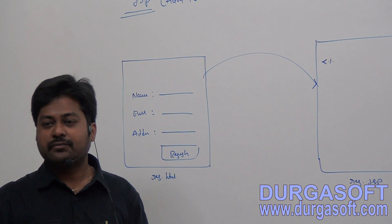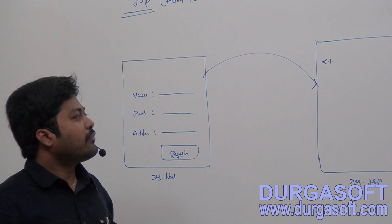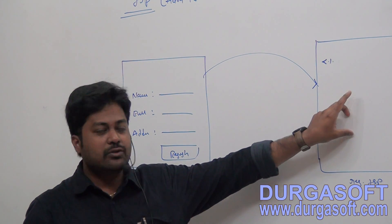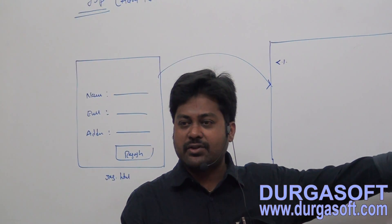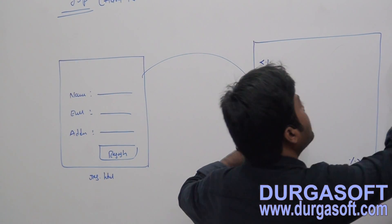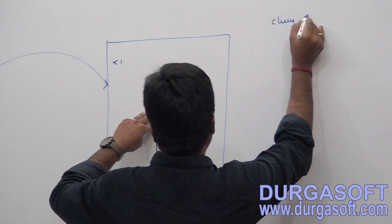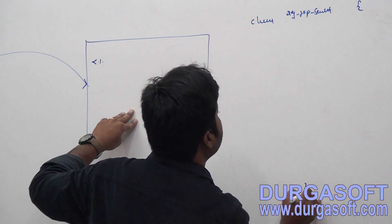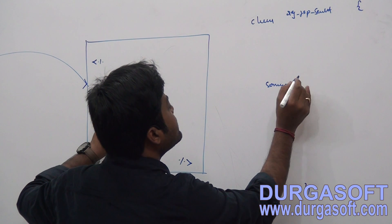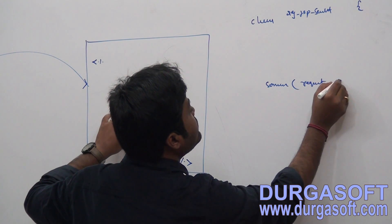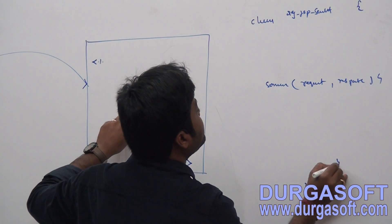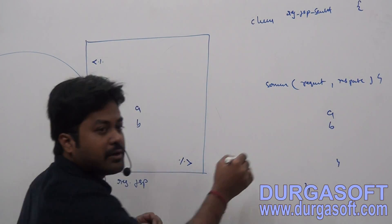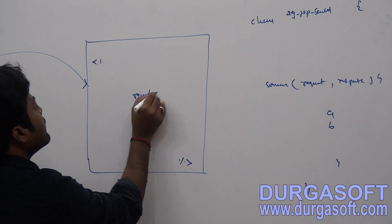You need a request object. Where do you get it from? Whatever code you write in a JSP, that code is finally placed into the service method of an HTTP servlet. It will generate one class — registration_jsp servlet — and under that servlet's service method it will place the code. Inside this service method it provides a request object and a response object.